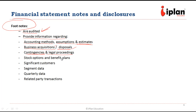Footnotes provide information regarding contingencies, specific circumstances, and legal proceedings if there are any. They also disclose any benefits plan for management or employees, or stock options. They describe significant customers and their relative importance, as well as segment data, quarterly data, and related party transactions. If there are transactions with a party related to management or directors, those must be documented in the footnotes.